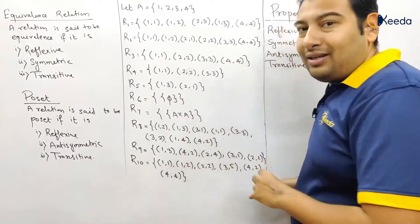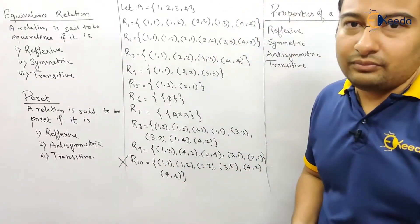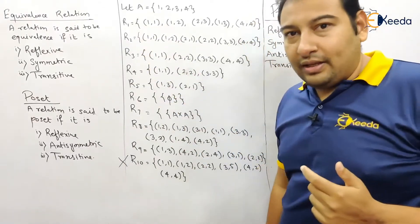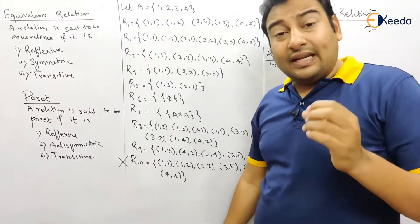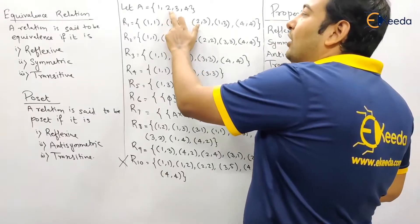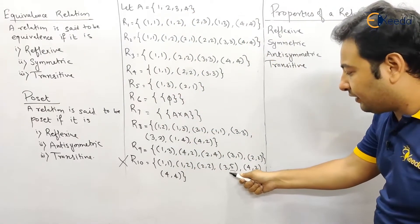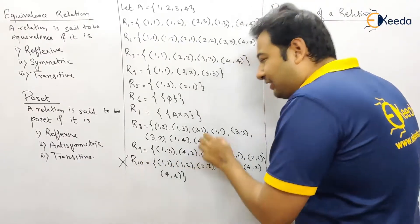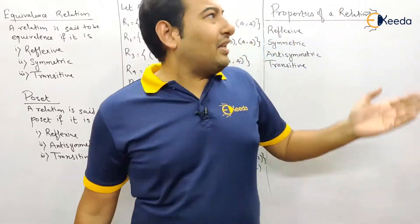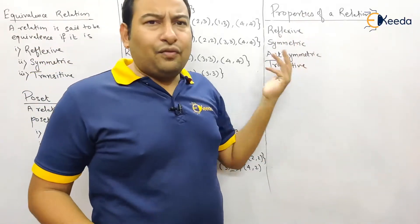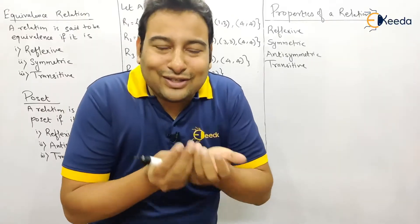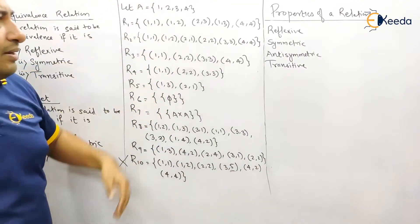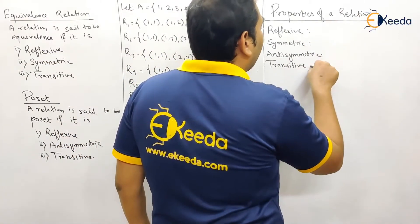First, concentrate on relation number 10 — it is actually not a relation. A relation must be a subset of A × A. Since set A has elements 1, 2, 3, 4 only, any pair must use only those values. But relation 10 contains the term (3, 5) — 5 is not in A, so it is not a subset of A × A. Therefore it is not a valid relation and we will exclude it from further discussion.